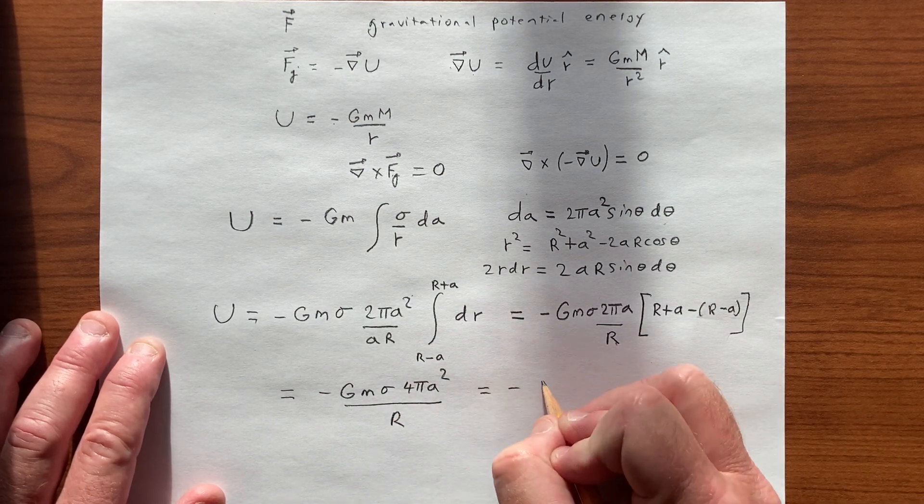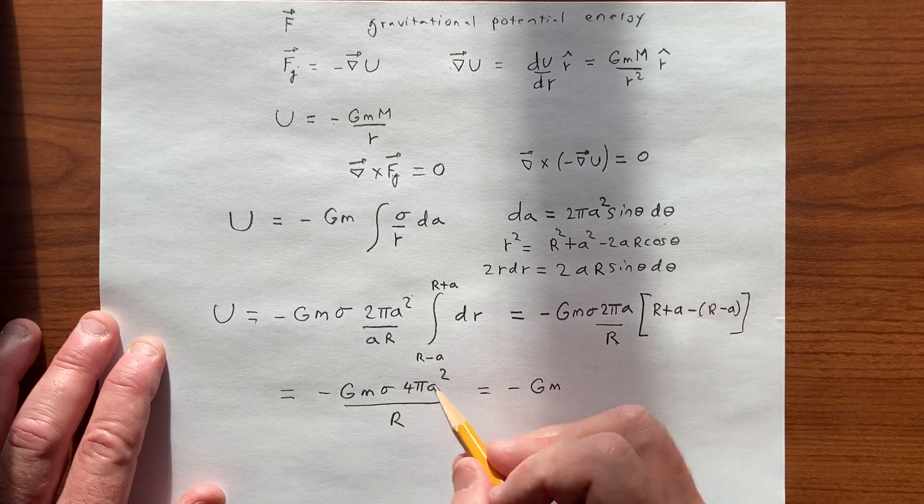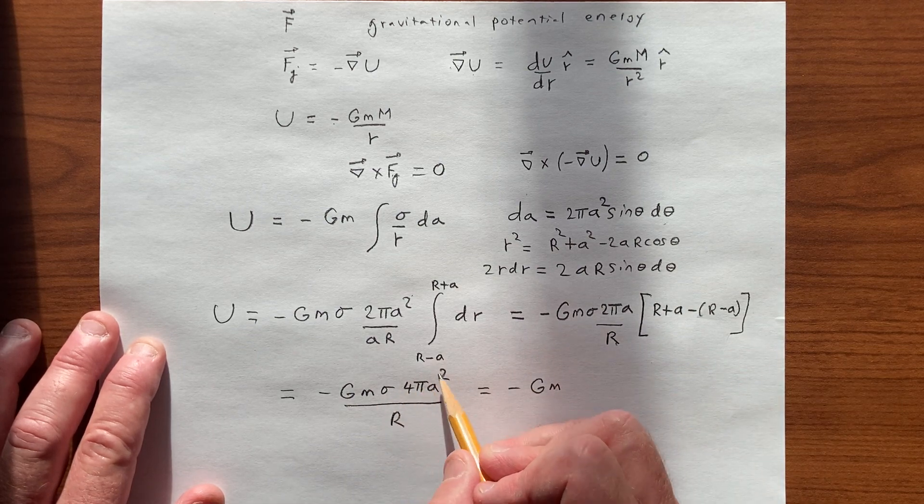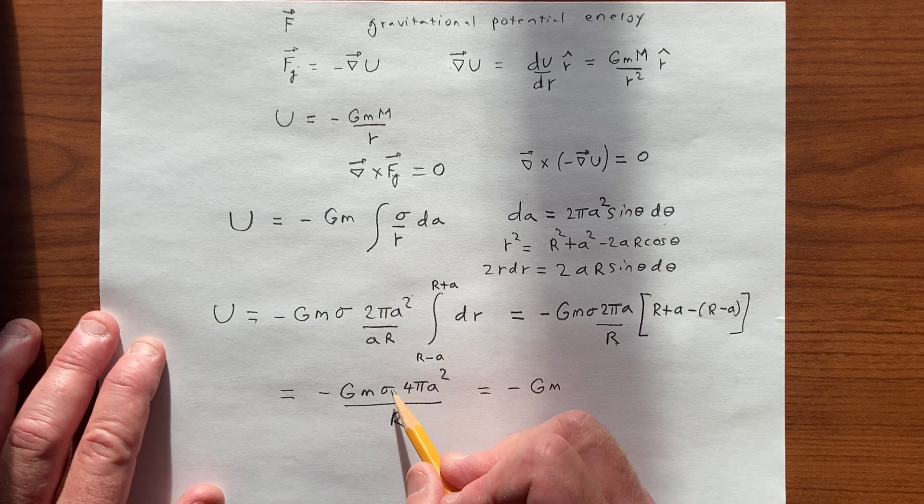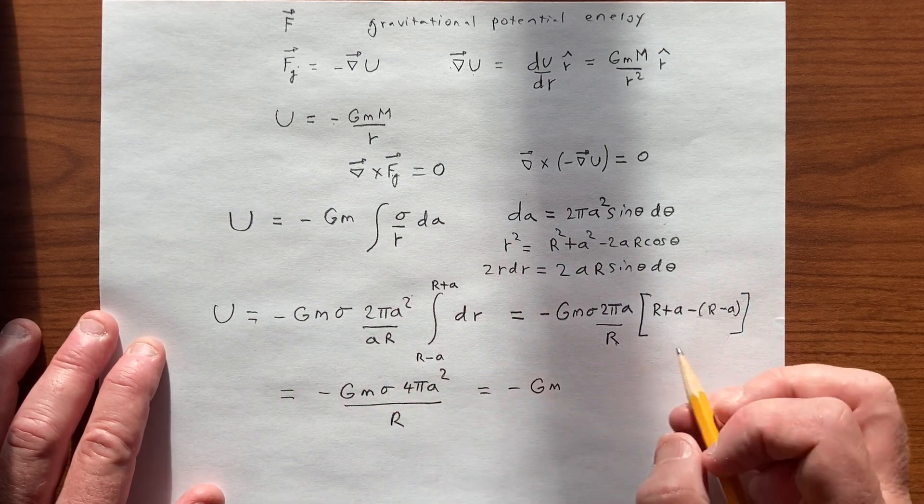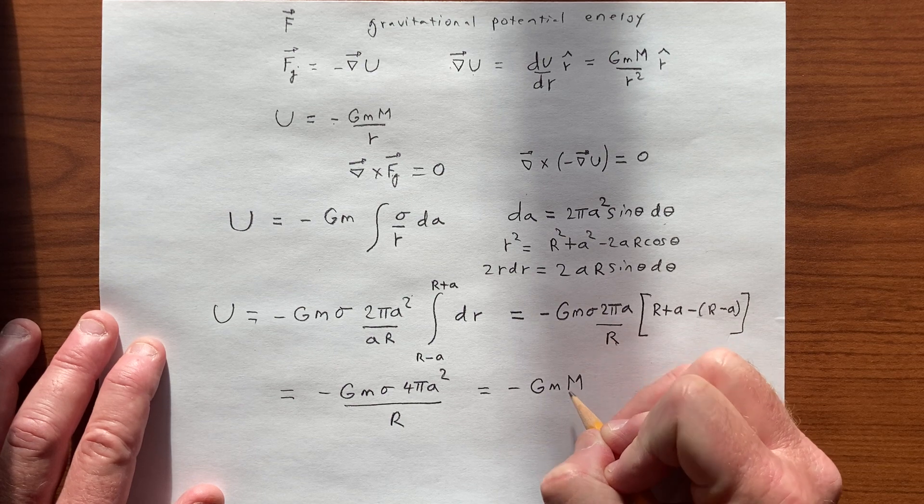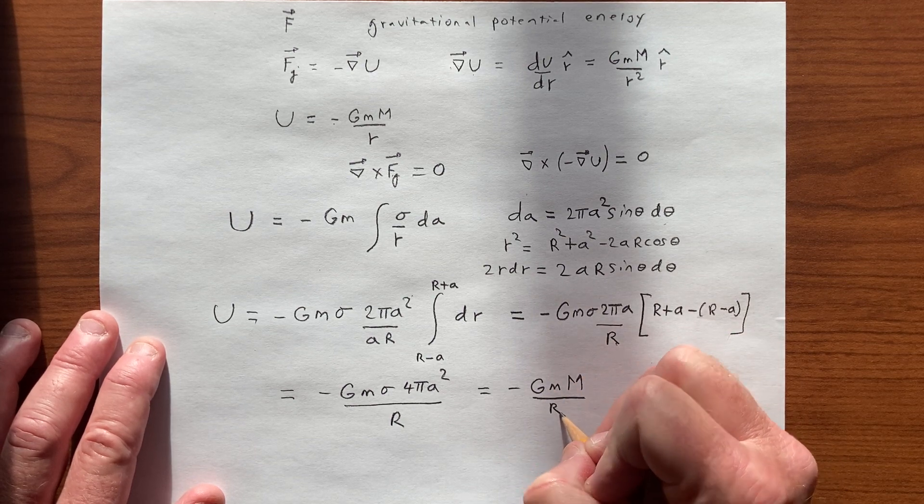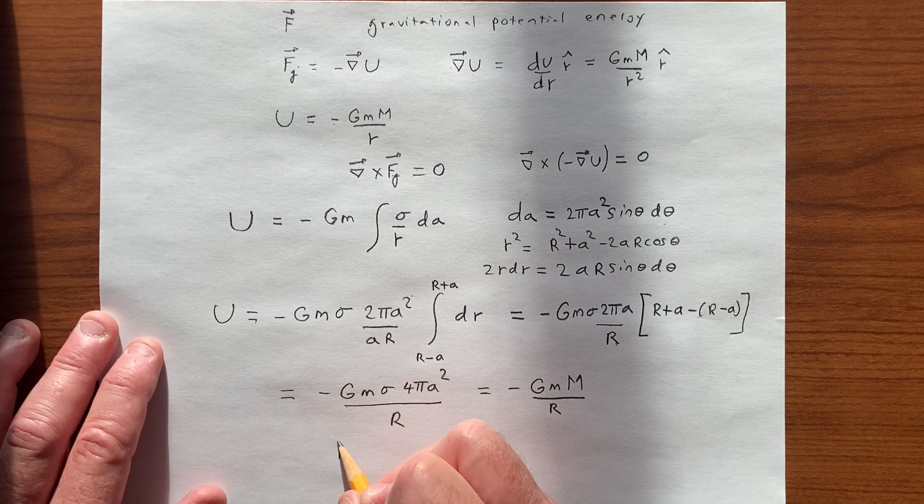which is minus G little m density times area on which the density exists. That gives us the mass, the mass m, big M, we end up dividing by r. We have our U, and then of course,